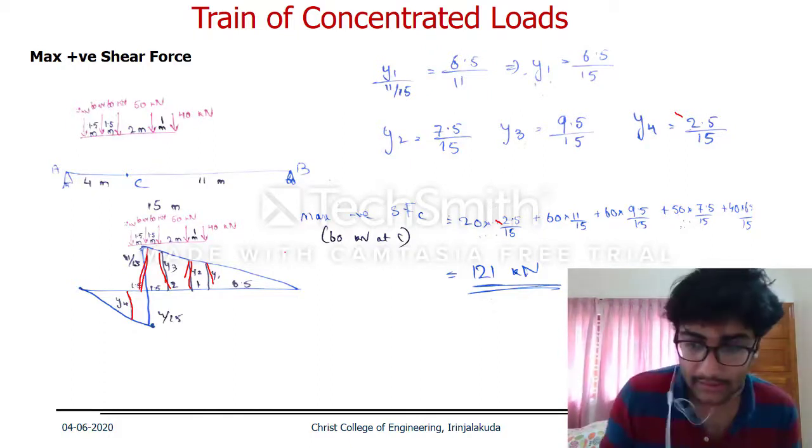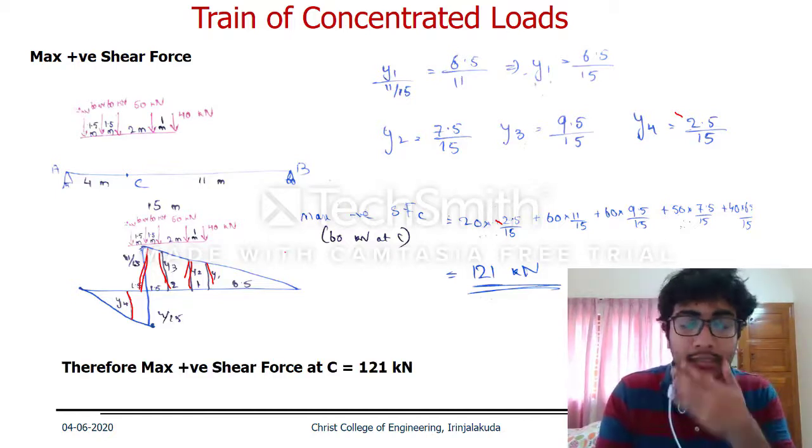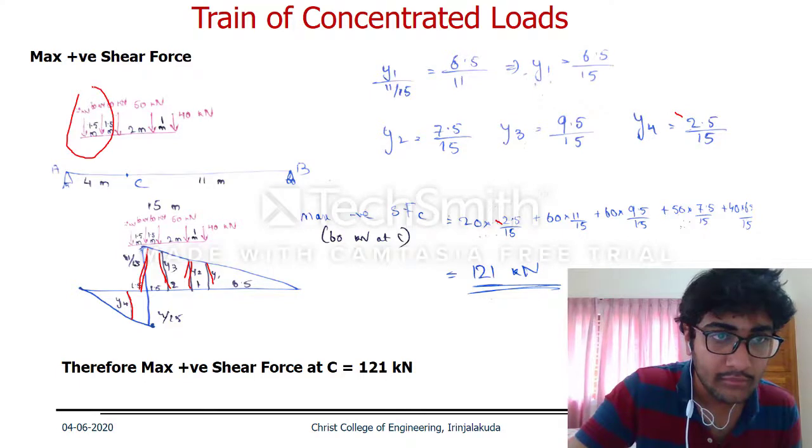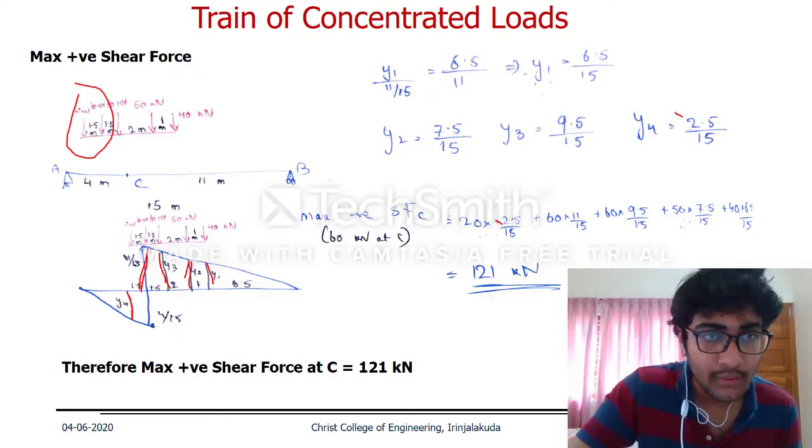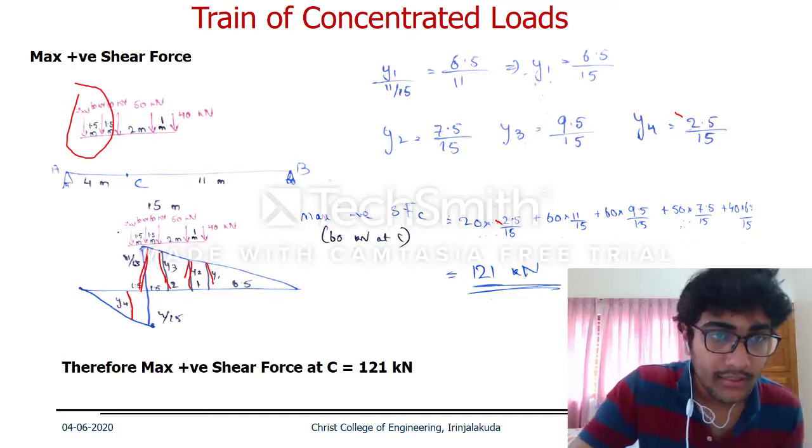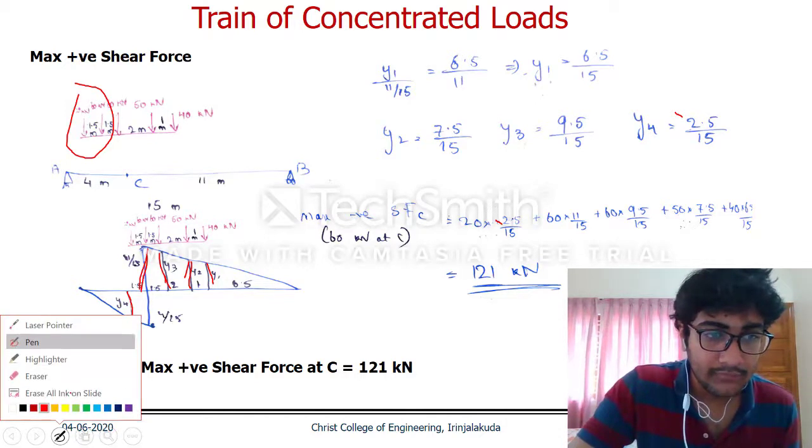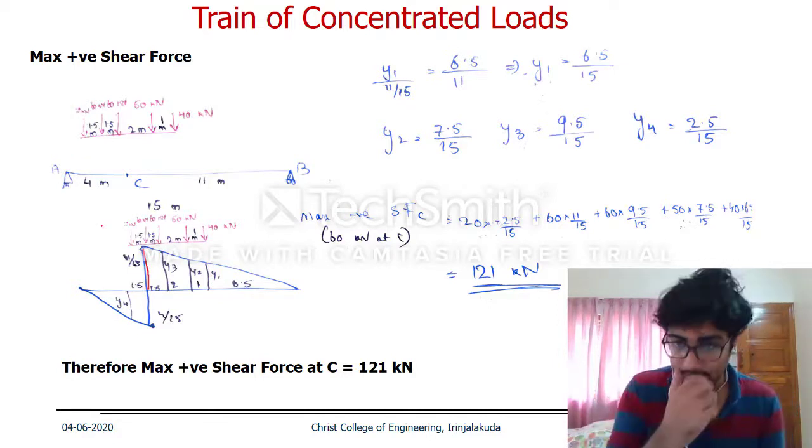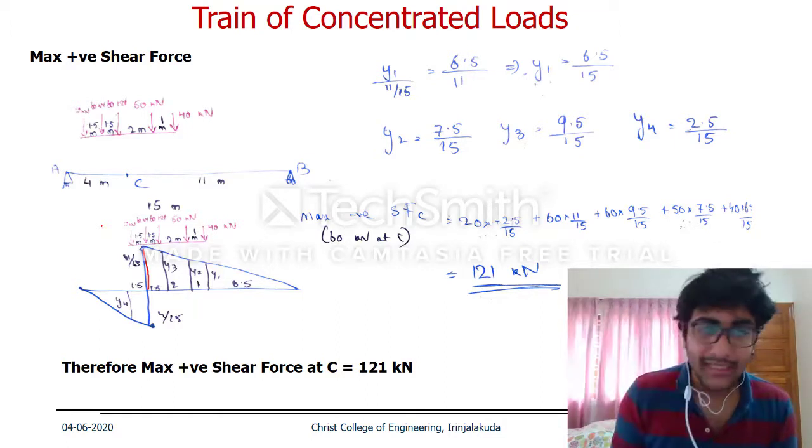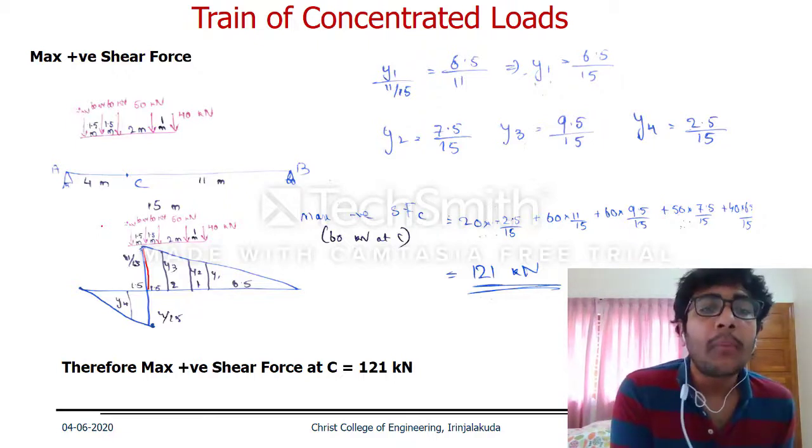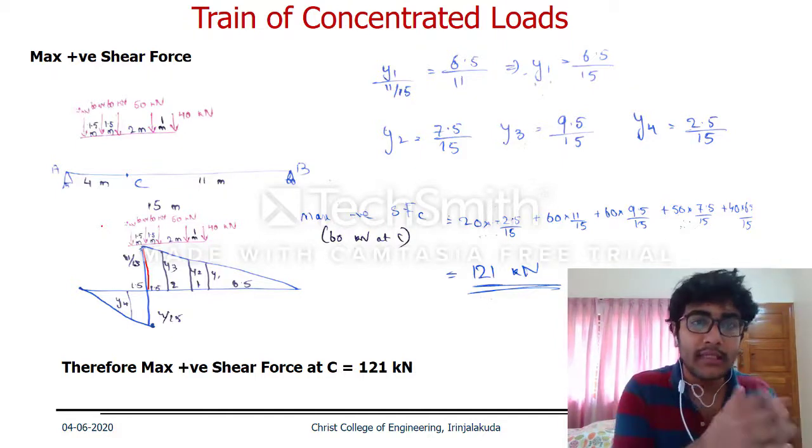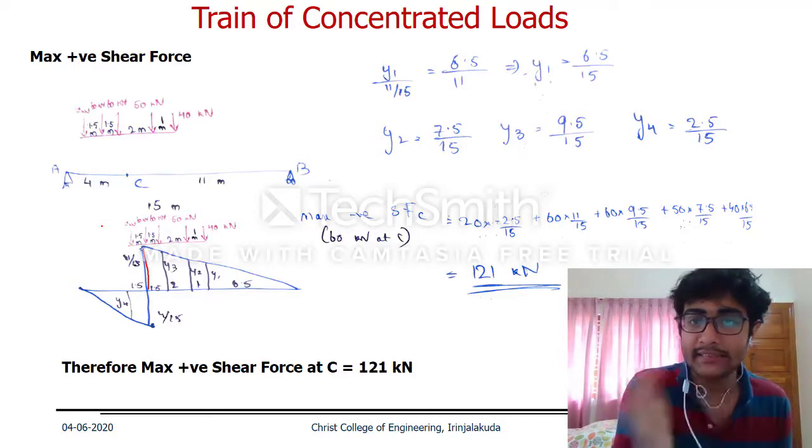You might be wondering why. The reason lies in the magnitude of the loads. One value is 120 kN and the second is 60 kN. The difference in load magnitudes affects the result. That's why we need to do trial and error to find the actual maximum value.